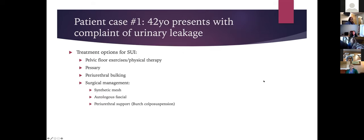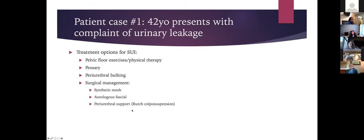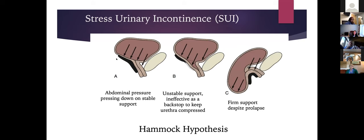Treatment options for stress urinary incontinence include pelvic floor exercises or pelvic floor physical therapy, pessary use, periurethral bulking, and surgical management. The surgical options include synthetic mid-urethral slings (used about 95% of the time), autologous fascial slings, and the Burch colposuspension. The exercises aim to rebuild the muscular support around the urethra.